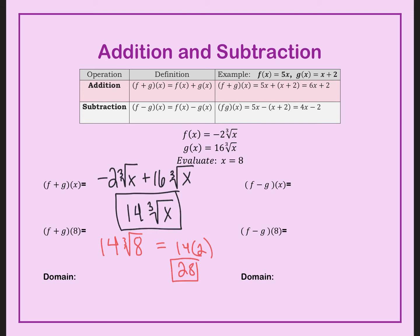What's my domain? They are both cube roots, and cube roots have a domain of all real numbers. So my domain is going to be all real numbers. And if both domains are all real numbers, then when I add, subtract, or multiply, all of them are going to have a domain of all real numbers.